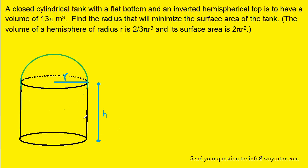So here we have the cylindrical tank, and on top of that we have the hemisphere. Notice that the bottom is flat, as stated in the question. We know that the volume of this tank is 13π meters cubed, so let's write down the formula for the volume of this structure.